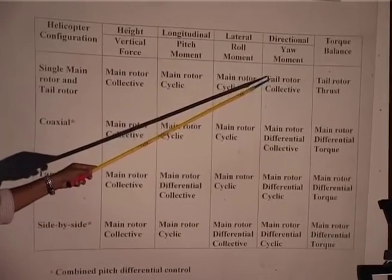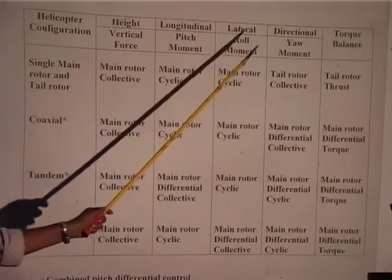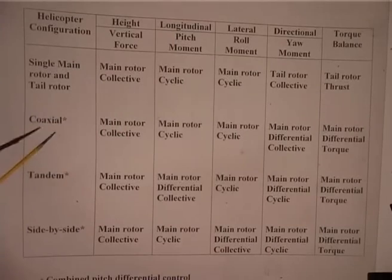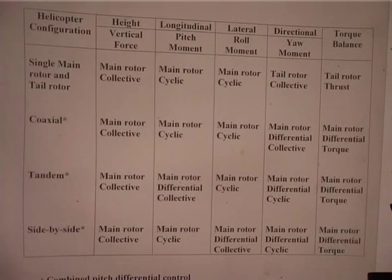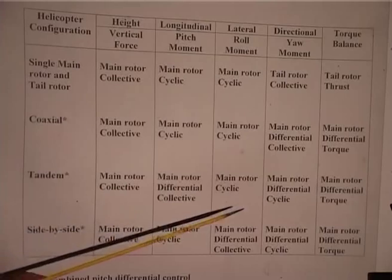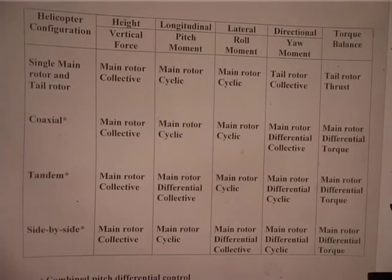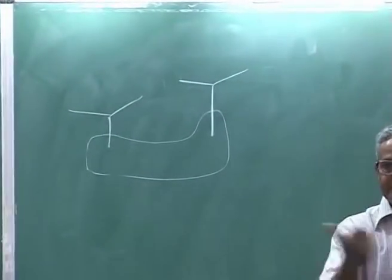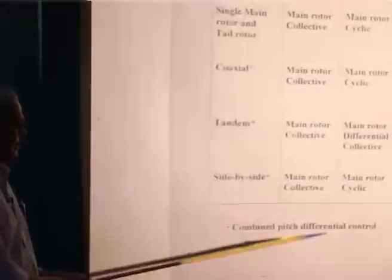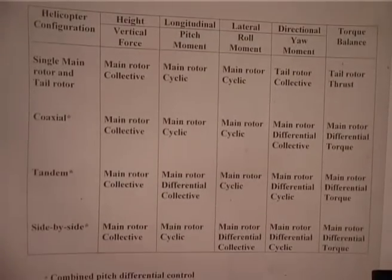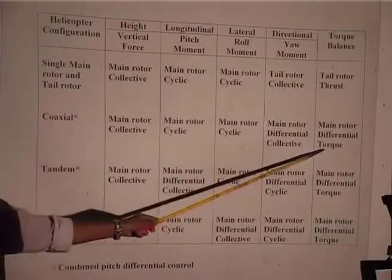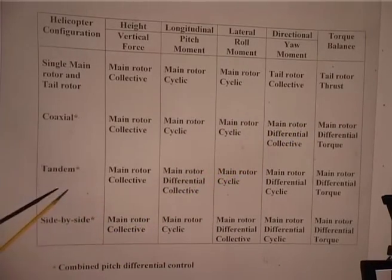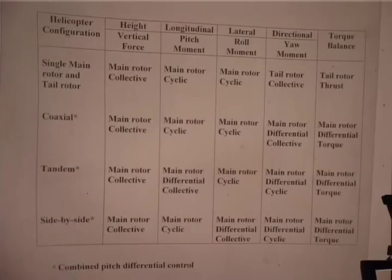For the yaw moment: for single main rotor it is tail rotor collective — you operate the pedal. Coaxial uses differential collective, meaning each rotor gets a different pitch angle, generating a torque differential. For tandem yaw, it is differential cyclic — one rotor tilts one side, the other tilts the other way, allowing rotation. Side by side also uses differential cyclic. The torque balance: tail rotor thrust for single main rotor, differential torque of two rotors for coaxial, main rotor differential torque for tandem, and differential torque for side by side.